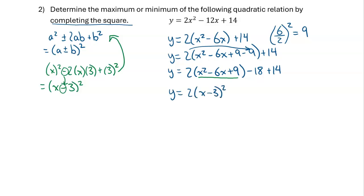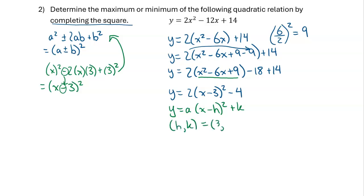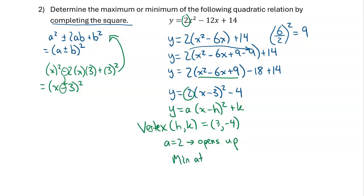We get 2 times x minus 3 all squared minus 4. This is now in vertex form y equals a times x minus h all squared plus k, so the vertex is at positive 3 and negative 4 — be careful with the sign of h. Because the a value is 2, the parabola opens upward, so it has a minimum at the vertex, meaning a minimum of y equals negative 4.